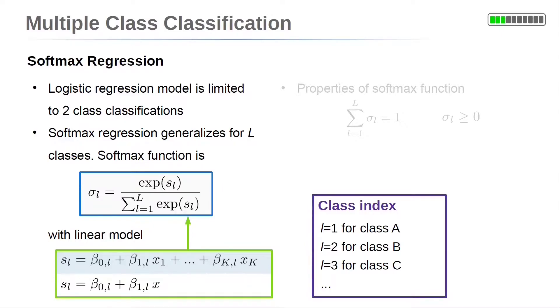This gives the lth linear model used by softmax regression: s_l = β_0l + β_1l × x_1 + ... + β_Kl × x_K.